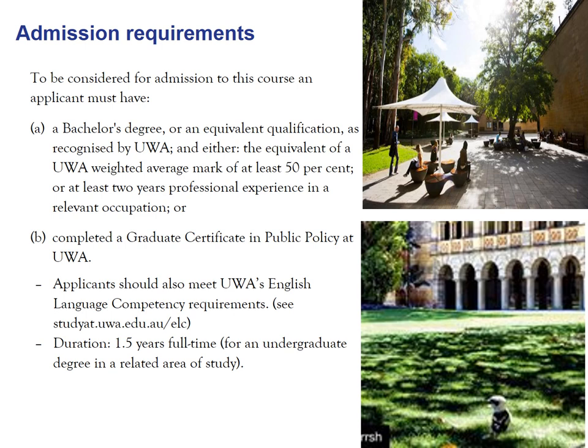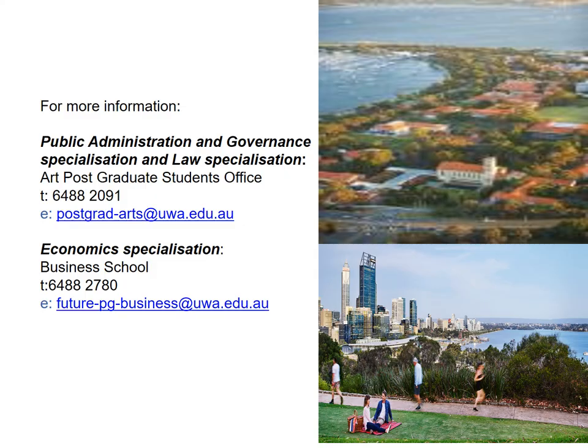If you would like to do a PhD, it is usually completed over two years. You can also study part-time, up to around five years. For more information, contact the Arts Postgraduate Students Office for public administration and governance or law specializations, or the UWA Business School for the economic specialization. Their phone numbers and emails are available on the slide.